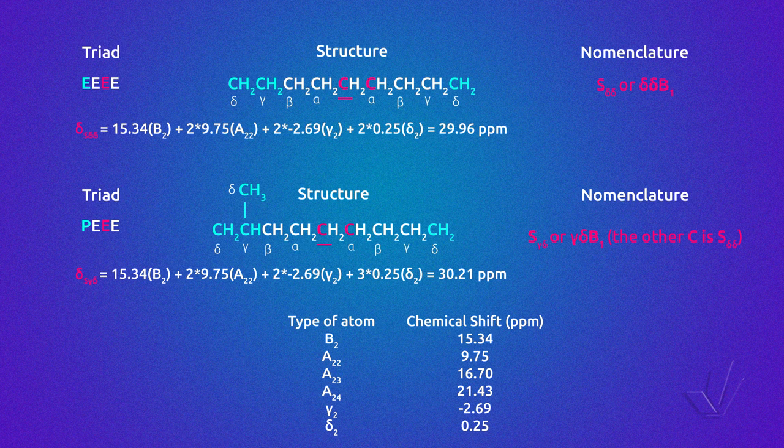It can be seen that on the left of the EEE triad, another ethylene unit was added, forming a tetrad. In the case that we have a propylene unit instead of an ethylene unit, the underlying carbon is no longer the S-delta-delta carbon but the secondary gamma-delta carbon, giving a chemical shift of 30.21 ppm. To view the nomenclature and use of the Liedermann and Adams table, please go to part 5 of this course.